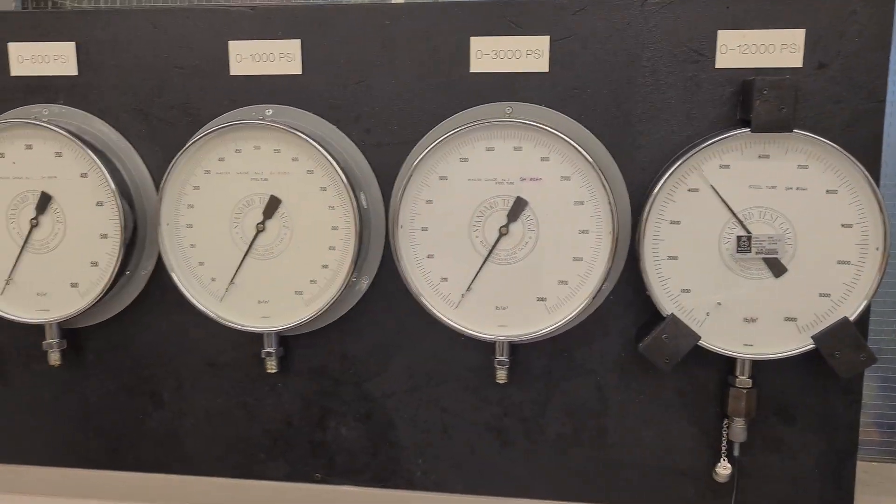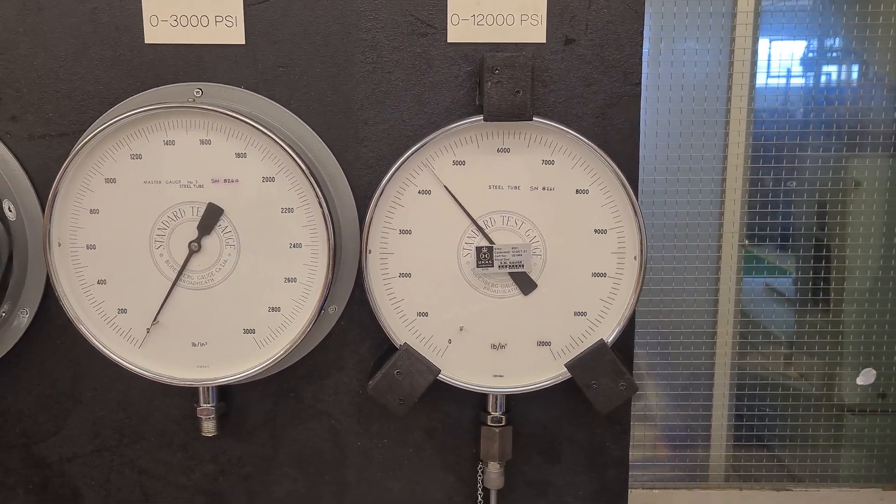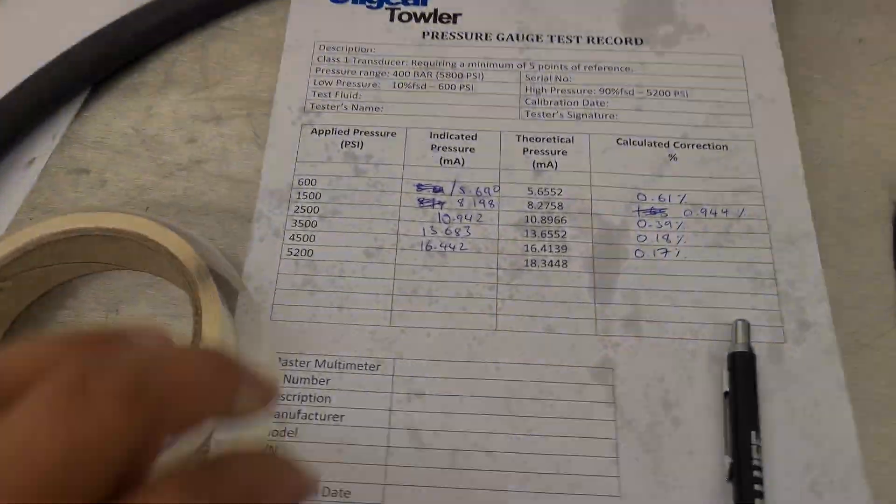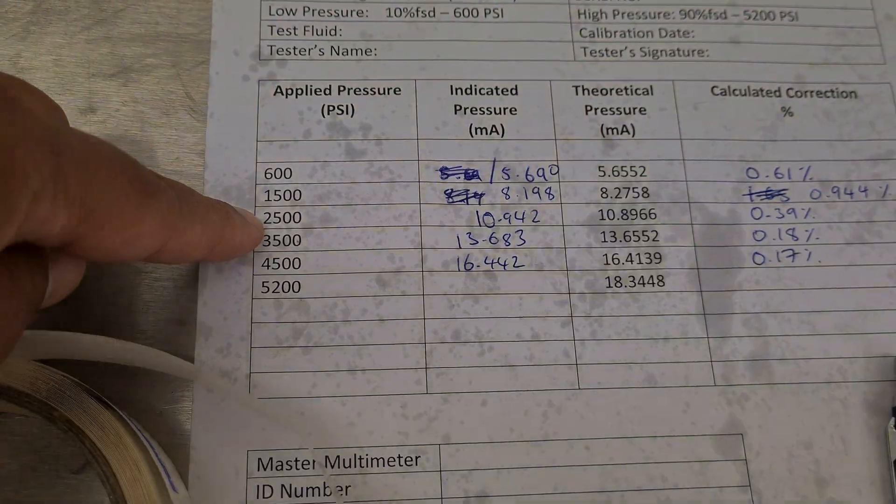So I've got these gauges here and this is a very accurate zero to twelve thousand psi gauge. And then what I need to do is I have a bunch of set pressures: 600, 1500, 2500, etc.